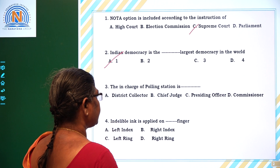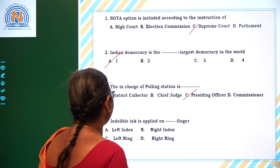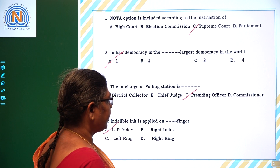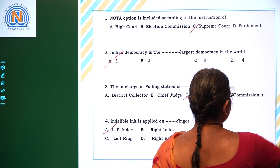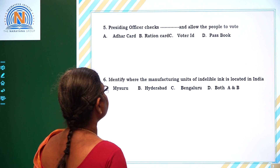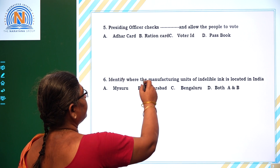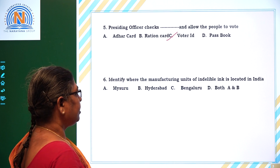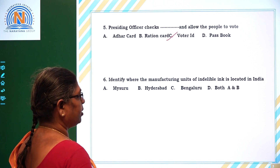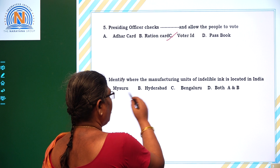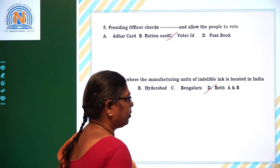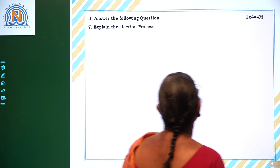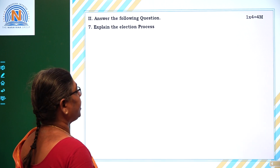The in-charge of the polling station is the presiding officer. The indelible ink is applied on the left index finger. The presiding officer checks the voter ID and allows the people to go for voting. The manufacturing units of indelible ink are located in both Mysore and Hyderabad.